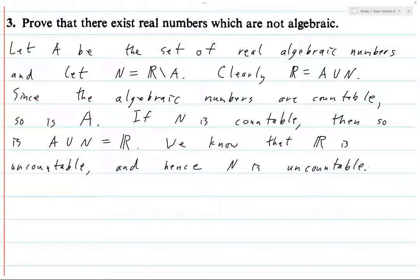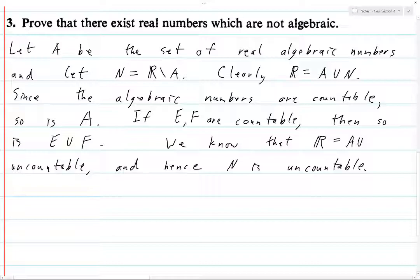So let's see, or maybe, here, let's do it this way. If E and F are countable, then so is E union F. We know that R equals A union N is uncountable.